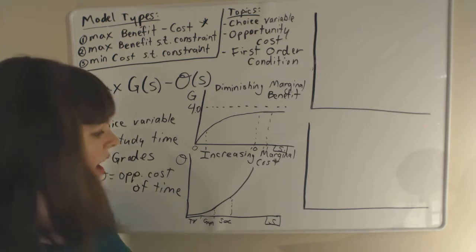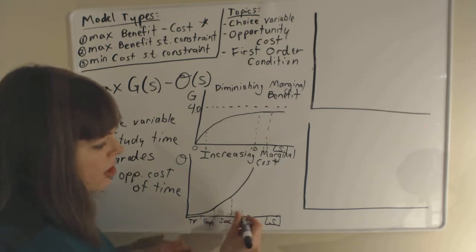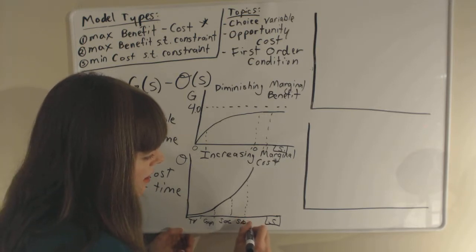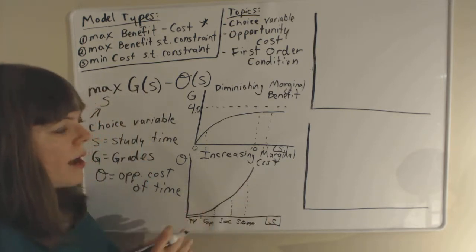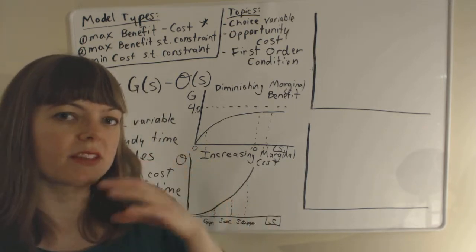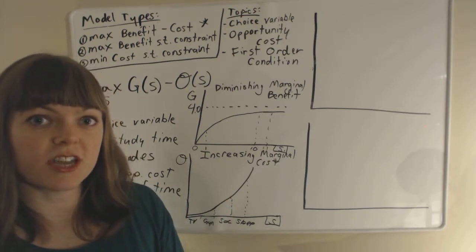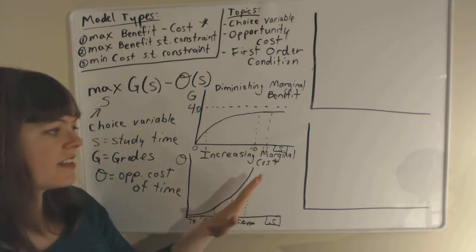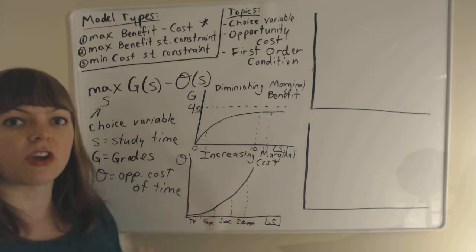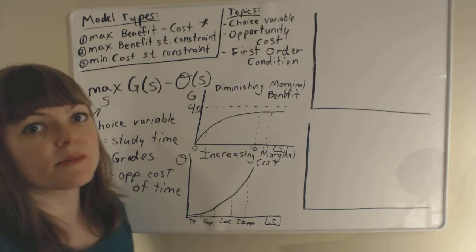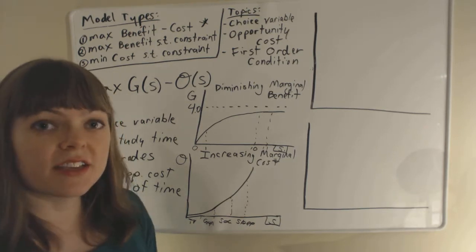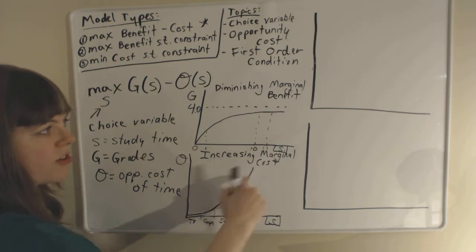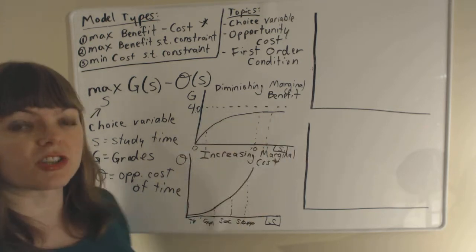After giving up TV time, internet time, and gym time, you have to give up the next most valuable thing — socializing. And if you've studied long enough, you'll eventually have to give up time sleeping and eating. Because people tend to give up the least valuable time first and most valuable time last, that's why opportunity cost has the shape of increasing marginal cost — the more you study, the more important the thing you're giving up each additional hour.